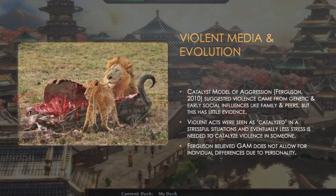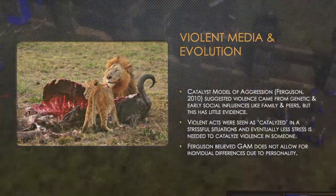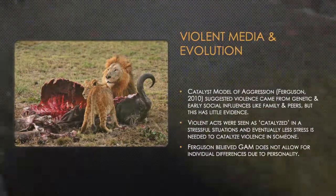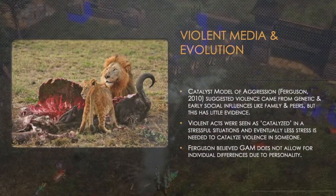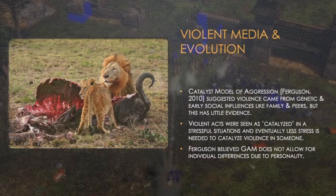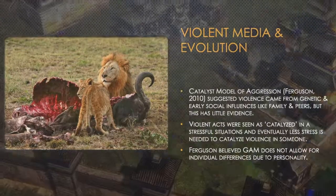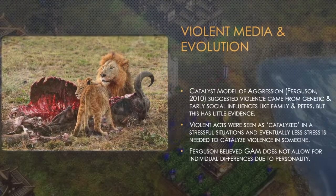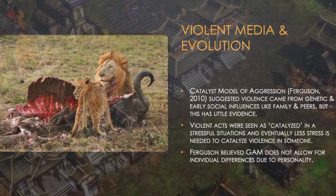Evolutionary theory, such as the catalyst model of aggression, which was proposed by Ferguson in 2010, suggested that violence came about from genetic and early social influences like family and peers. But this has little evidence. Violent acts are seen as catalyzed in stressful situations, and eventually less stress is needed to catalyze violence in someone.